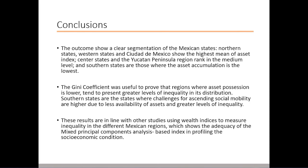When using the index to analyze the Mexican situation, the outcomes show a clear segmentation of Mexican states: northern and western states as well as Mexico City in one group, the center states and the Yucatan Peninsula in the medium level, and the southern states where asset accumulation is at the lowest. The Gini coefficient proved that regions where asset possession is lower tend to show greater levels of inequality in its distribution. Southern states face higher challenges for ascending social mobility due to less availability of assets and greater inequality. These results are in line with other studies using wealth indices to measure inequality in different regions of Mexico, showing the adequacy of the mixed principal components analysis-based index in profiling socioeconomic conditions.